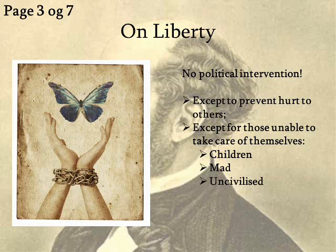Mill also acknowledges a natural political authority over people unable to take care of themselves, and he quotes three interesting groups: children — remembering this is the period when the first big schools were being set up; the mad — the first asylum was set up in the 1790s, only five decades before he wrote this; and the 'uncivilized' — bear in mind this is also the big colonial era, and Mill is very much a child of his time.